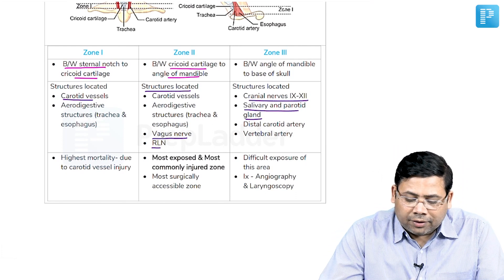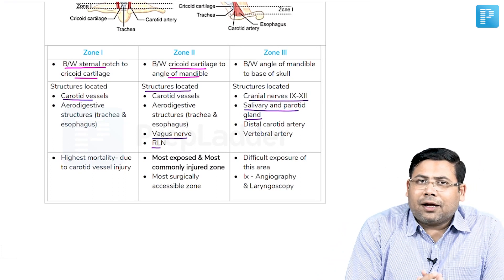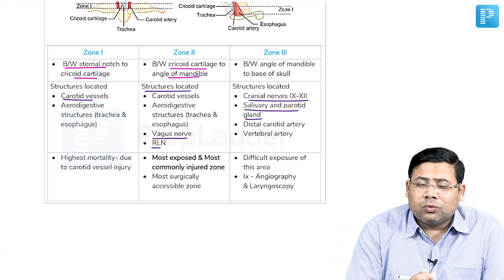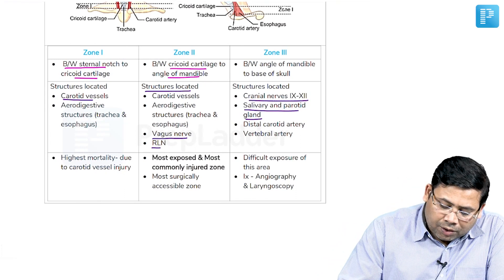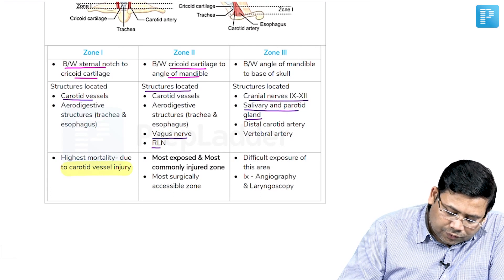So salivary and parotid. So try to understand what is the biggest concern of any head injury. The answer is the vascular injury to the main important vessels. Now let me tell you in a nutshell how to approach the neck injury.